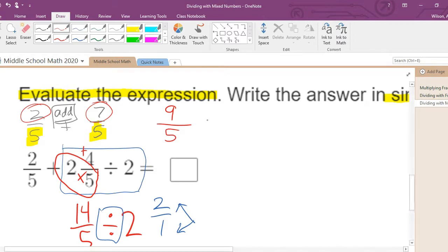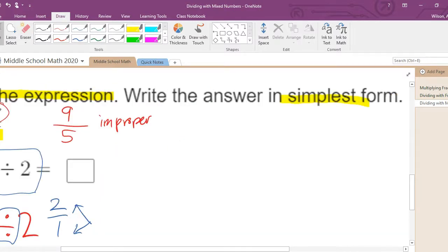Nine fifths, however, is going to be counted wrong because it is improper. Improper fractions need to be turned into mixed numbers. Nine fifths means nine divided by five. Keep in mind, this line right here, that means to divide. So we're doing nine divided by five.